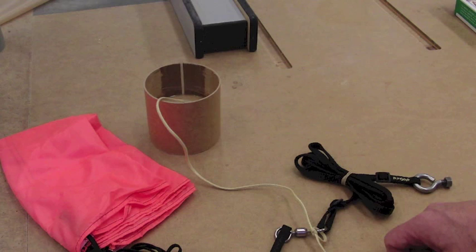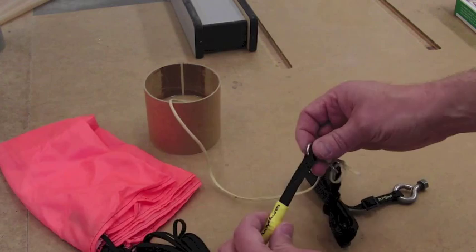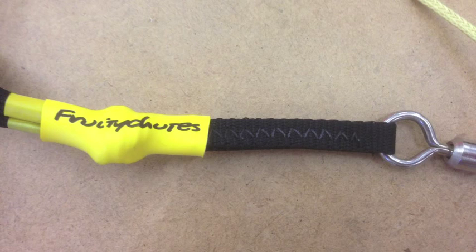However, for the strap, I want to retain it a little bit better. To do that, I'm actually going to sew a loop in the ends. You can see a professionally produced parachute, this one is from Fruity Chutes, how they have a zigzag pattern of sewing through the strap. We're going to reproduce that.